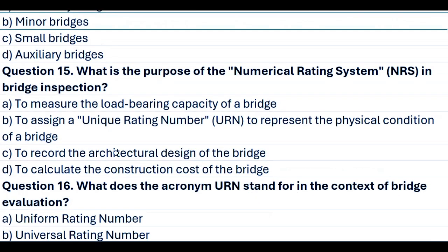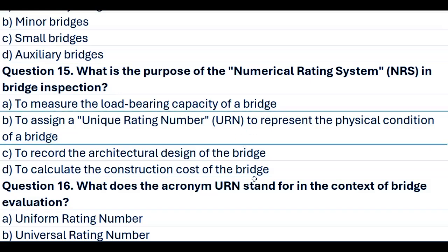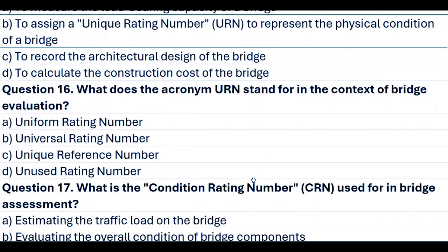Question 15. What is the purpose of the Numerical Rating System (NRS) in bridge inspection? A. To measure the load-bearing capacity of a bridge. B. To assign a unique rating number (URN) to represent the physical condition of a bridge. C. To record the architectural design of the bridge. D. To calculate the construction cost of the bridge. Answer B. To assign a unique rating number (URN) to represent the physical condition of a bridge.